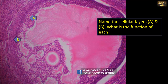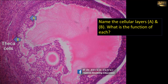Name the cellular layers A and B and the function of each. This is a growing follicle showing the granulosa cells, which produce estrogen mainly. On the outer side are the theca cells — theca interna and theca externa. The theca interna cells are concerned with the production of progesterone and androgenic hormones, which are then converted into estrogen by the granulosa cells.